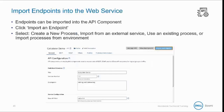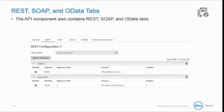Endpoints can be imported into the API component. Existing processes can be imported into the web service so they can be called through the API. Click Import an Endpoint and then select a new process. You can import from an external service, use an existing process, or import processes from an environment. The API component also contains REST, SOAP, and OData tabs.